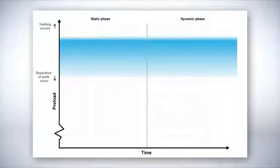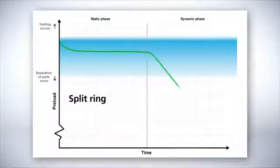We start with a bolt secured with a traditional split ring. The split ring counteracts settlement, but not vibration, so the bolt will likely rotate loose when exposed to vibration.